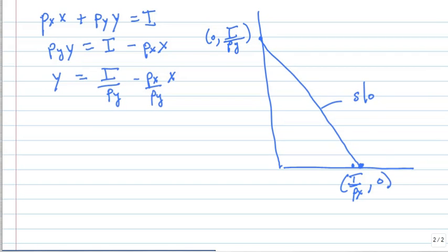The slope of this line is equal to minus px over py. px over py is called the relative price. It's how much you have to spend in the marketplace to get an additional unit of x by selling good y—that is the relative price.